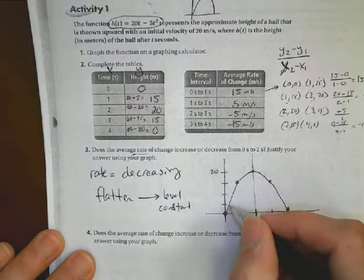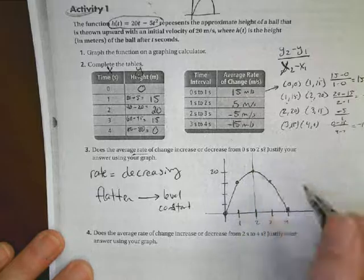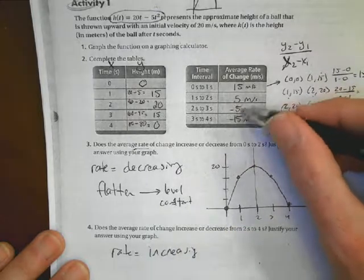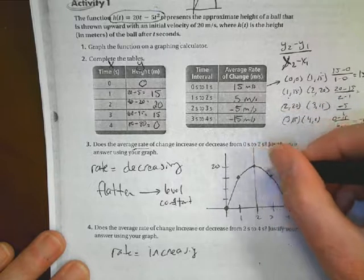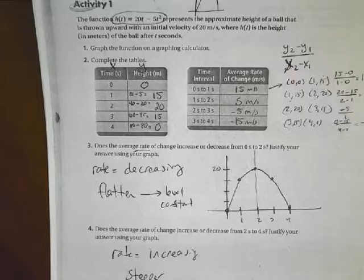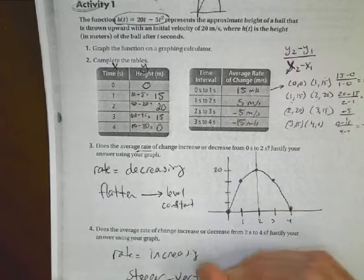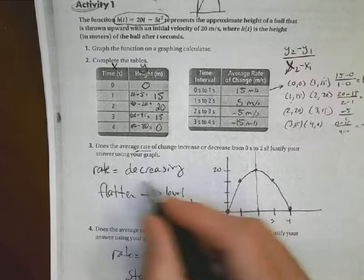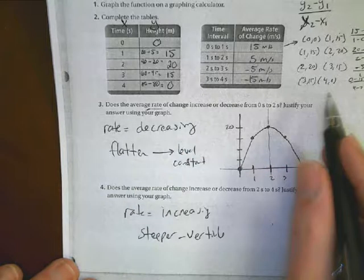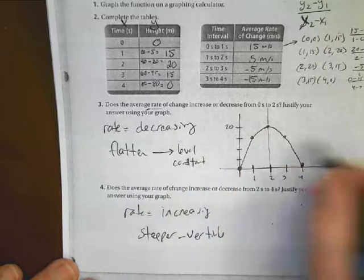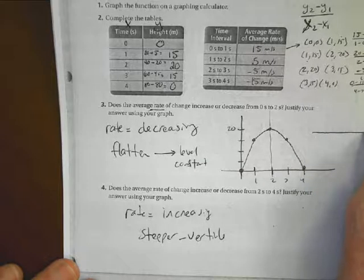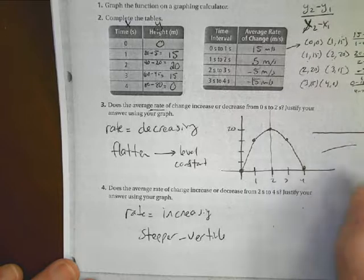So what it wants to know, does the average rate of change increase or decrease from 0 to 2? Here's my 0 to 2 value. What we have to think about is this. A rate of change increasing and decreasing, that doesn't mean if it's going up or down. So be careful there. We're not talking about if it's going positive or negative. We're talking about does the rate increase or decrease. And what we see back with our rate of change, we started off at 15 meters per second, and then it became 5 meters per second. That means my rate of change is actually decreasing. As it goes up, it starts to slow down. So my rate is actually decreasing from 0 to 2.